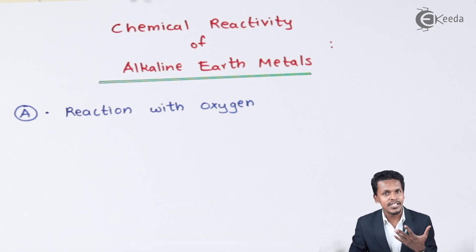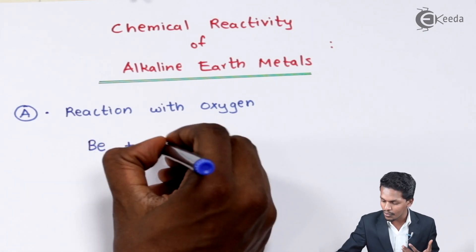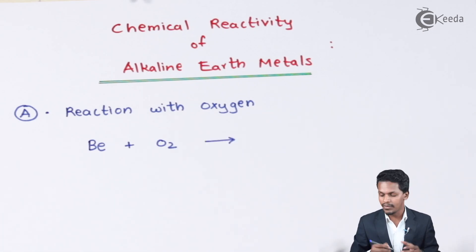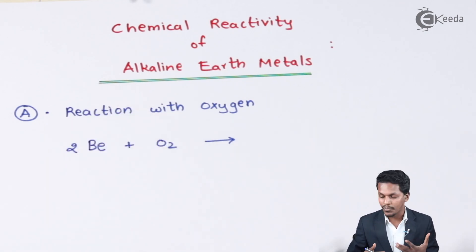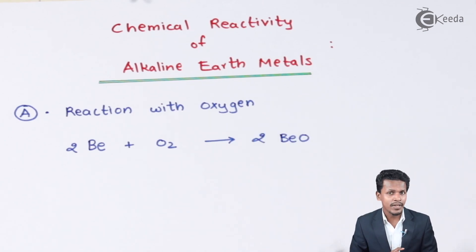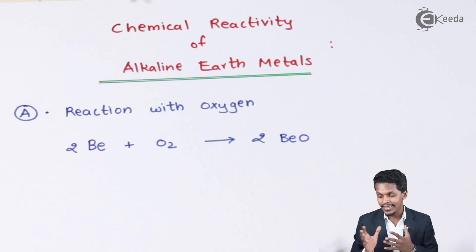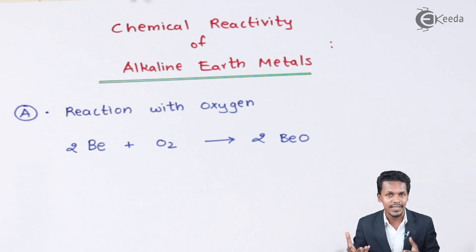For beryllium reacting with oxygen, we need to balance the reaction carefully. Two moles of beryllium react with one mole of oxygen to produce two moles of beryllium oxide (BeO). Oxygen has an oxidation state of −2, so the metal has an oxidation state of +2. Most of these metals therefore have an oxidation state of +2. The beryllium is ignited to produce the metal oxide BeO.